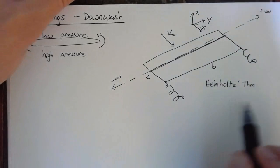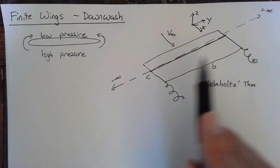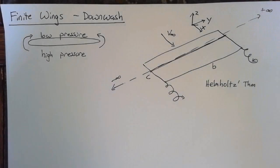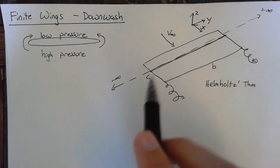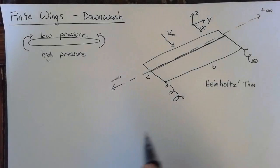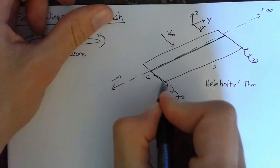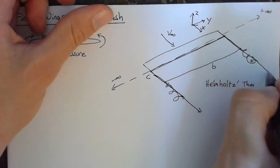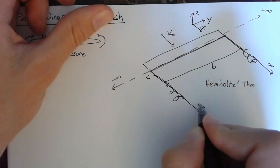And what Helmholtz's theorem says is that a vortex filament cannot end unless it's on a surface or it's in a loop. So this vortex filament either needs to go to infinity, needs to end on a surface, or needs to create a loop. So what we will do is we will send this vortex filament off into infinity in the x direction. So these guys are going to go towards infinity.